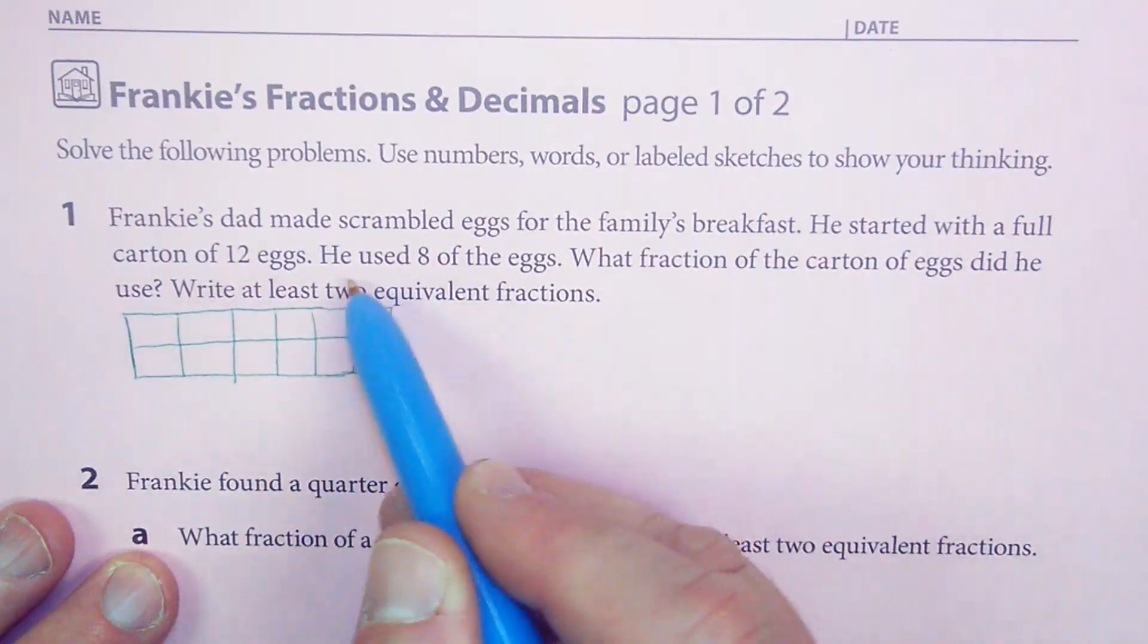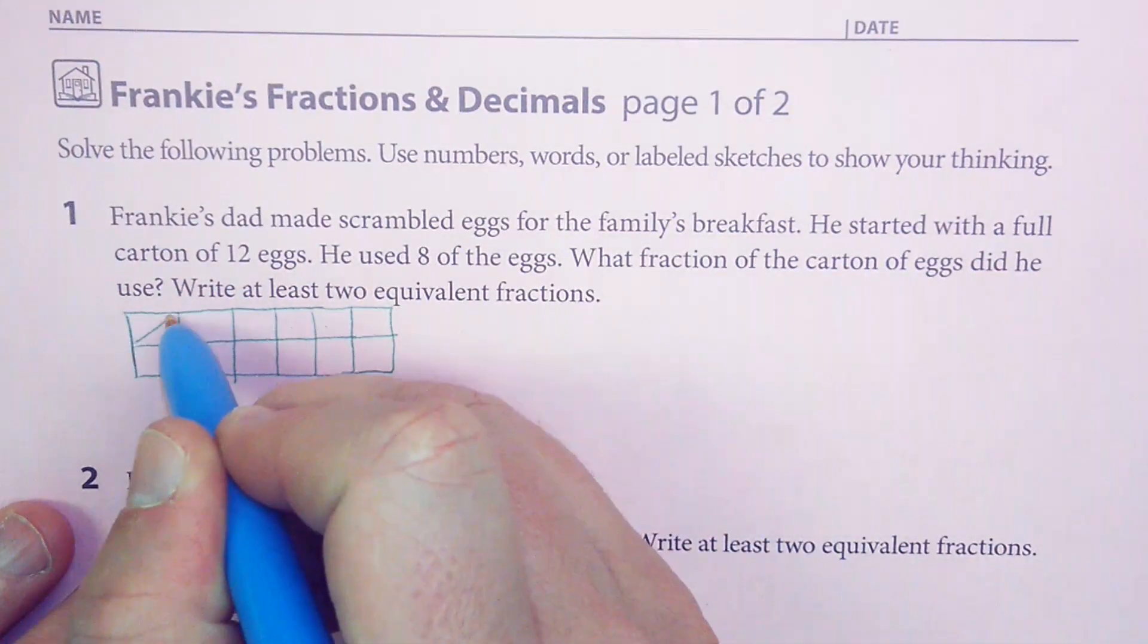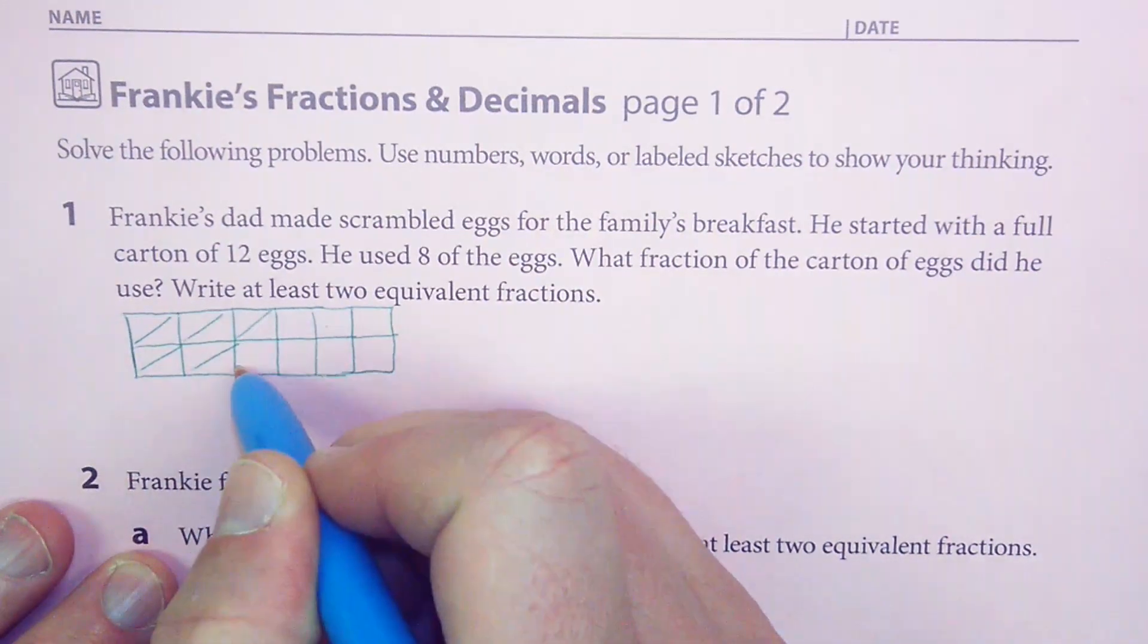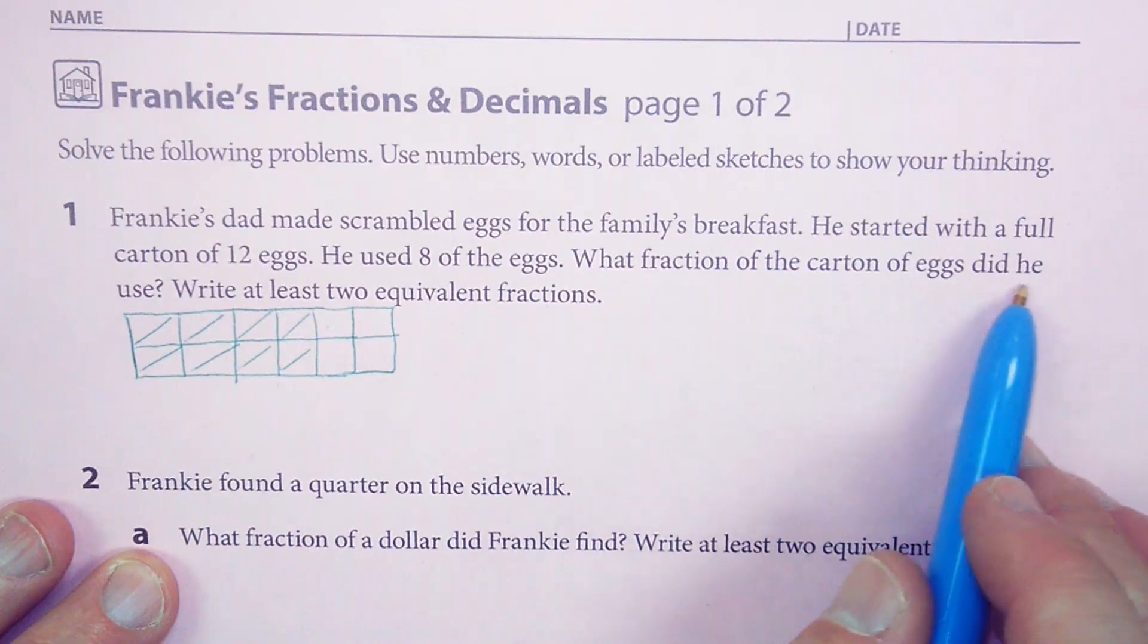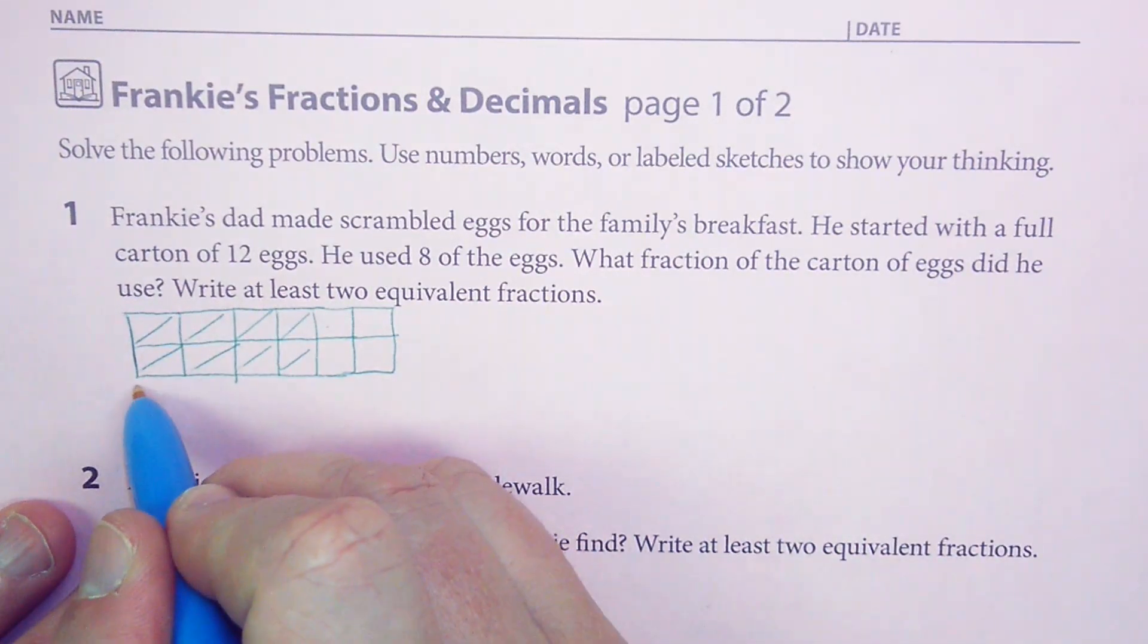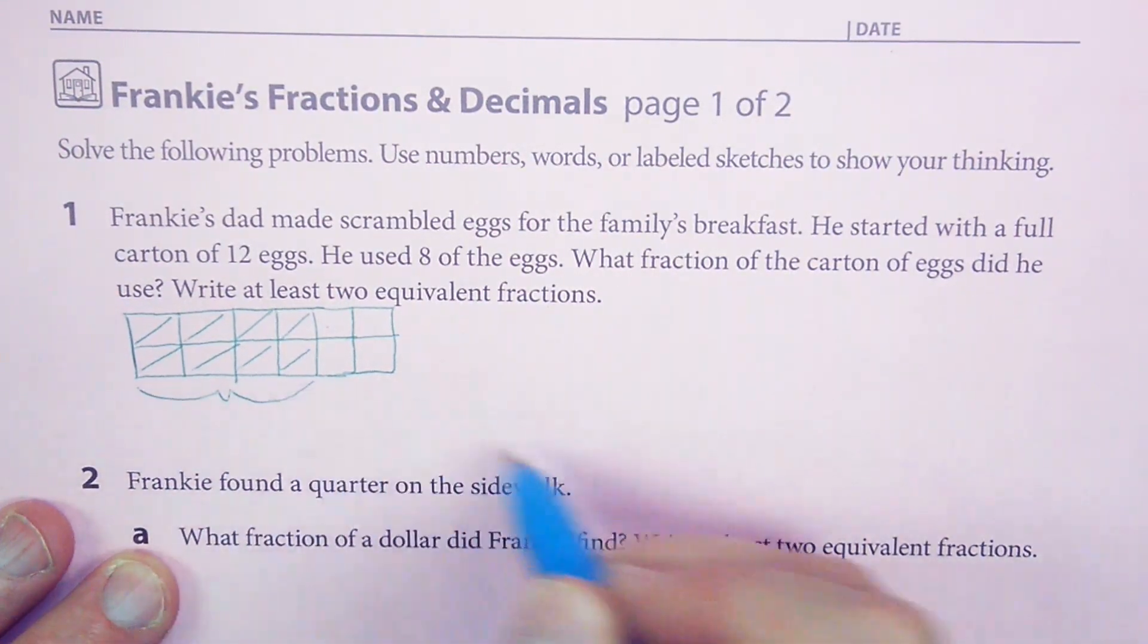He started with a full carton of 12 eggs, and he used 8 of the eggs. So he used this one, 2, 3, 4, 5, 6, 7, 8. What fraction of the carton of eggs did he use? So we're saying, how much is this?